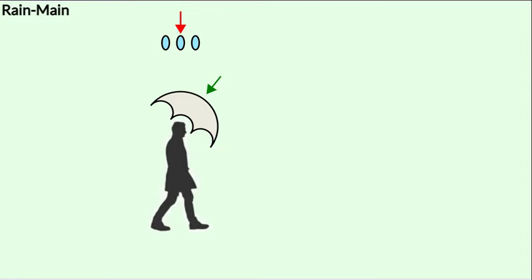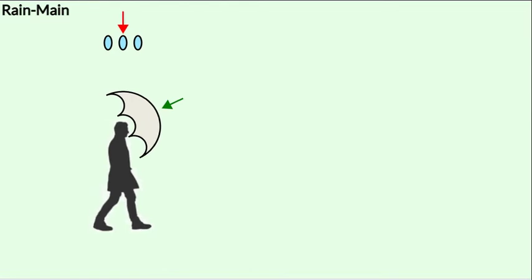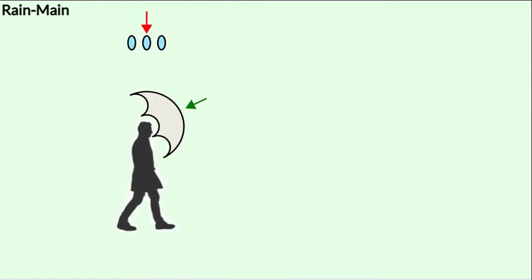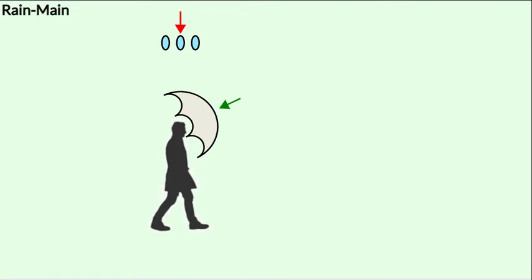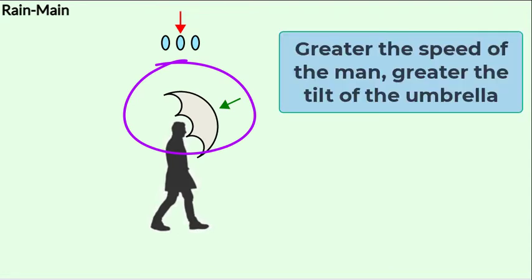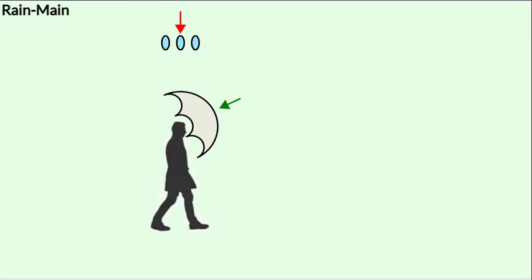What would happen if the man begins moving faster? As the man begins moving faster, the angle at which the rain strikes the man changes again. So the man has to tilt his umbrella even more in order to protect himself from the rain. The faster the man travels, the more he has to tilt his umbrella. The tilting of the umbrella is due to the fact that the relative velocity of the rain with respect to the man changes as the man moves.